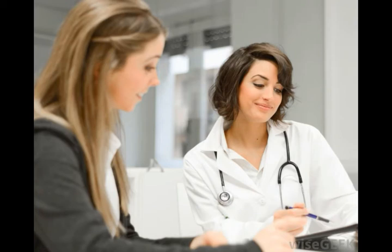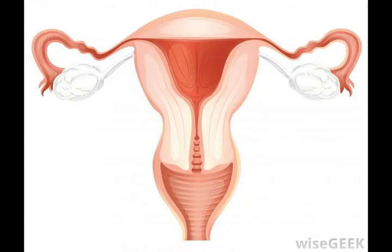Females tend to have a different physical build than males, including different proportions and measurements. These anatomical features, however, differ much more between individuals and are not universal. For example, while many women exhibit more slender shoulders and wider thighs than men, some women have wide shoulders and thin thighs.